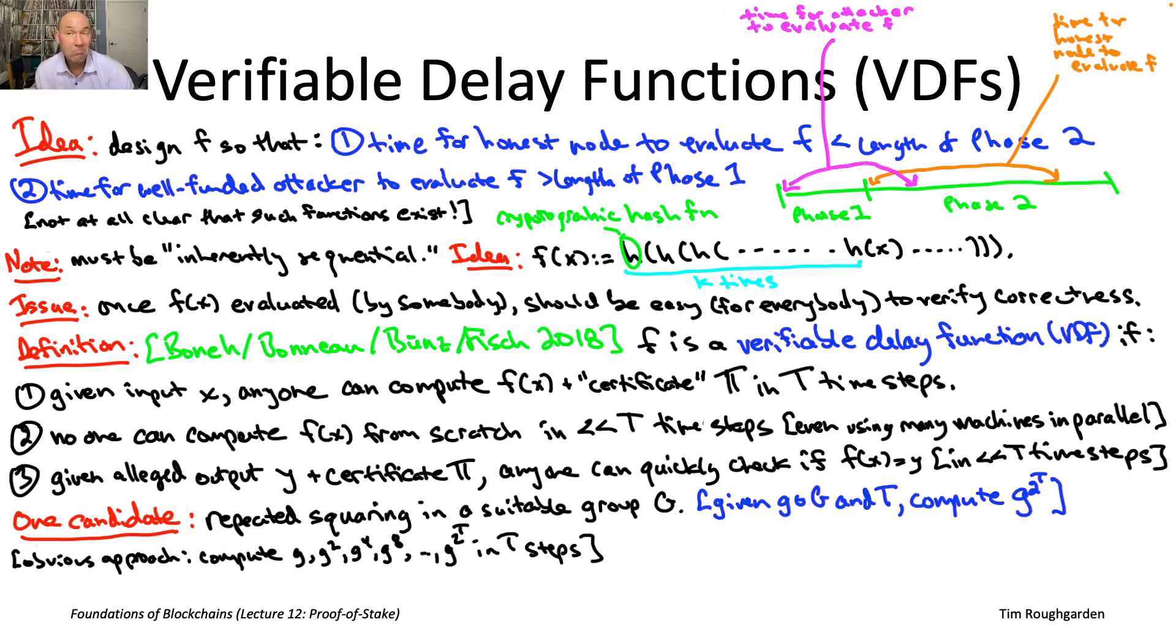So that first property is going to hold literally no matter what the group is. The second property, on the other hand, is definitely going to fail for some sufficiently sort of simply structured groups. There will be groups where there will be shortcuts to computing G to the two to the T, which are qualitatively faster than repeated squaring.